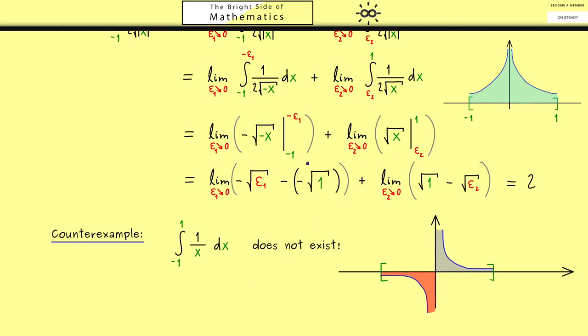However, together with the orientation, this blue one is a positive area and the red one is a negative area. Now by calculating the limits it turns out that the blue one is infinity and the red one is minus infinity. And therefore adding the limits does not make sense.